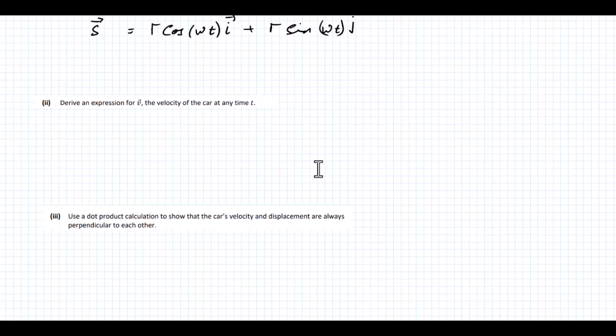Derive an expression for V, the velocity of the car at any time T. The velocity of the car is what we get when we find the derivative of this. We're going to do dS/dt. That's going to be our velocity.